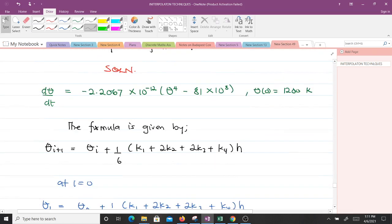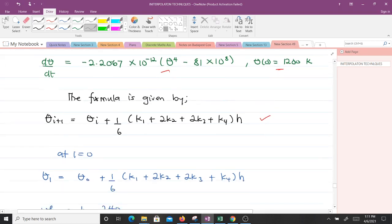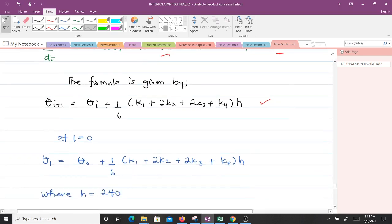The solution: this was our differential equation, this was the initial condition. We are seeing the formula for the Runge-Kutta fourth order, it's given by this thing here. That means at i equals 0, we will get theta 1. It will be equal to theta naught plus 1 over 6, multiplying K1 plus 2K2 plus 2K3 plus K4 times H. And where H is given to be 240. From the question, step size is 240.